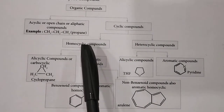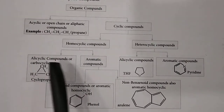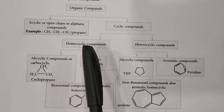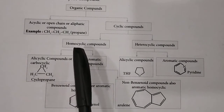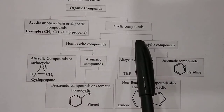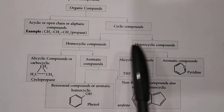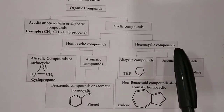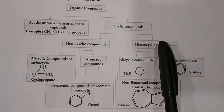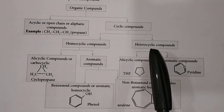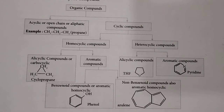Homocyclic compounds are further divided into alicyclic and aromatic. Homocyclic means all atoms in the ring are carbon only. Heterocyclic means one of the ring atoms is replaced by nitrogen, oxygen, or sulfur. In heterocyclic compounds, one or more of these heteroatoms can be fused into the cyclic ring.